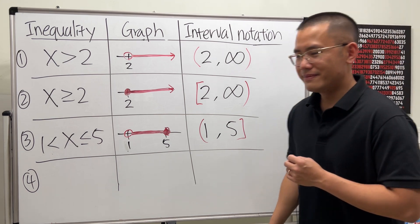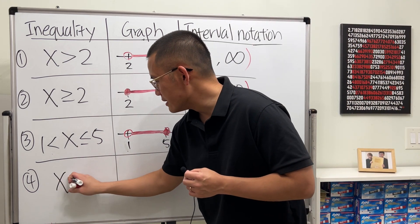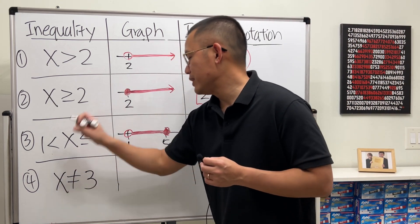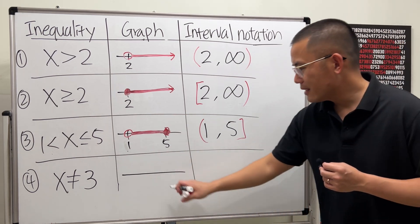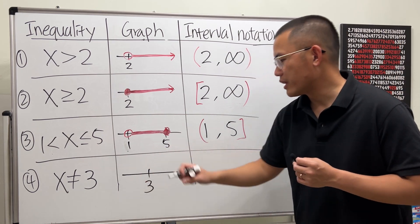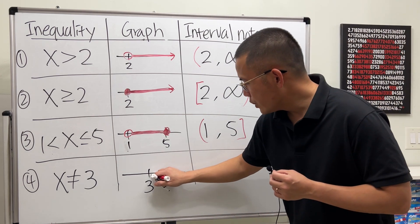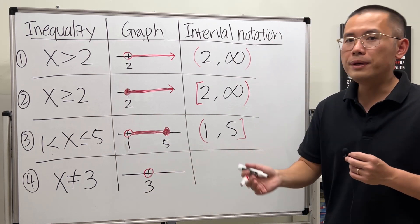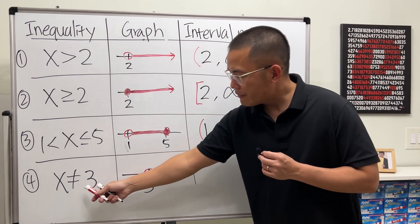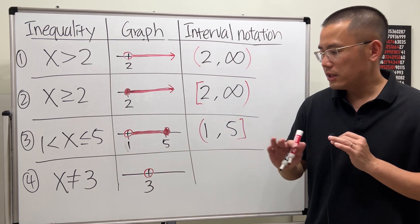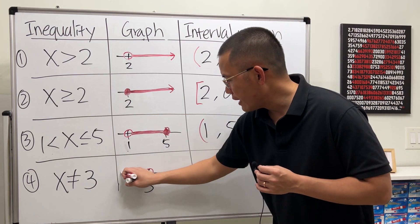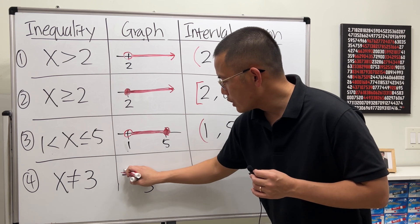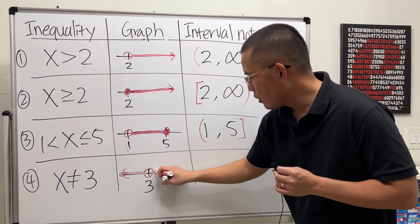Now for the last one, let's say we have x is not equal to 3. Okay, draw a number line. Go ahead and mark the number that we care, which is 3. Here, we don't want x to be 3, so open circle. When we have x is not equal to 3, that means anything but 3. So here, you will have to go both ways. So it can be all the way to the left and also all the way to the right.